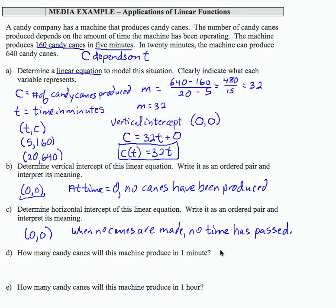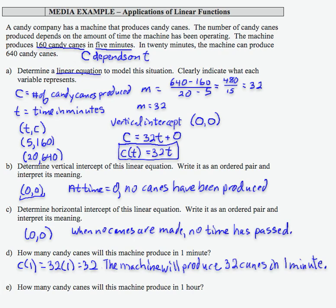And in part D then, how many candy canes will the machine produce in 1 minute? Well, that's C of 1. Time is 1 minute. So 32 times 1 equals 32. And I have that the machine will produce 32 canes in 1 minute.